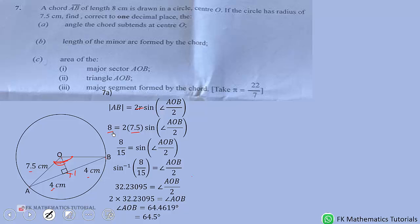Now let's look at the B part, the length of the minor arc formed by the chord. So the minor arc is from here to here, this one. Length of arc is given by theta over 360 times 2 pi r.